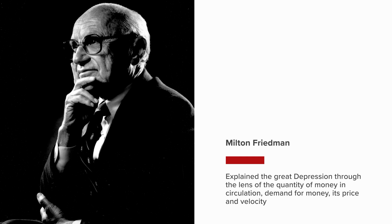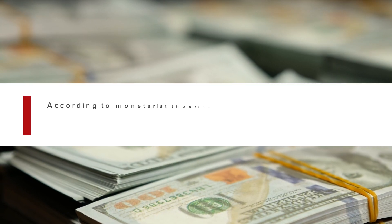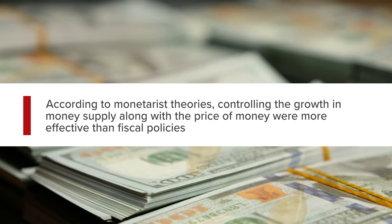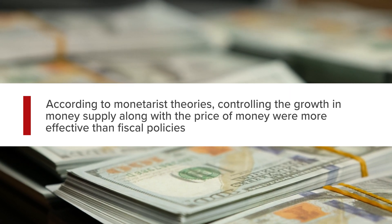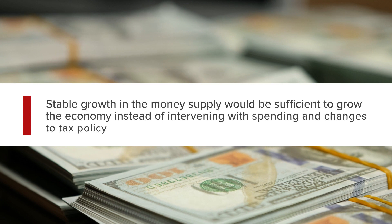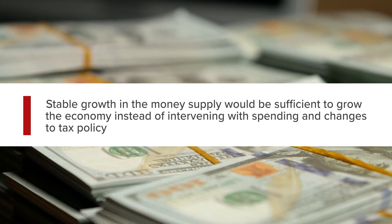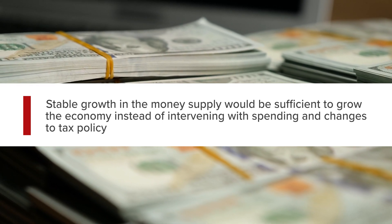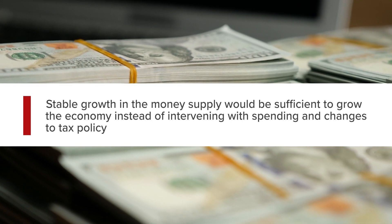That means how fast money circulates through the economy. According to monetarist theories, controlling the growth in money supply along with the price of money were more effective than fiscal policies. Stable growth in the money supply would be sufficient to grow the economy, instead of constantly intervening with bouts of spending and changes to tax policy.